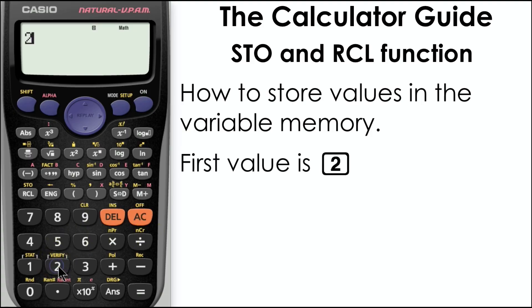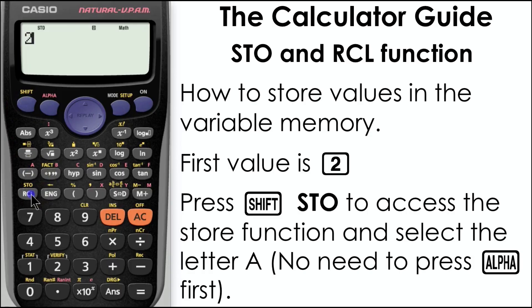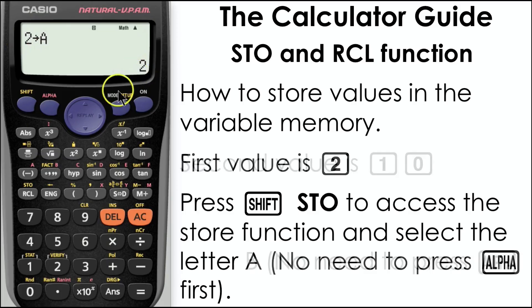The first value we're going to store is 2. Input 2 and then press shift and store to access the store function. We're going to select the letter A from the choice of letters available. There's no need to press alpha first — just press the button and that's stored into memory A on the calculator.